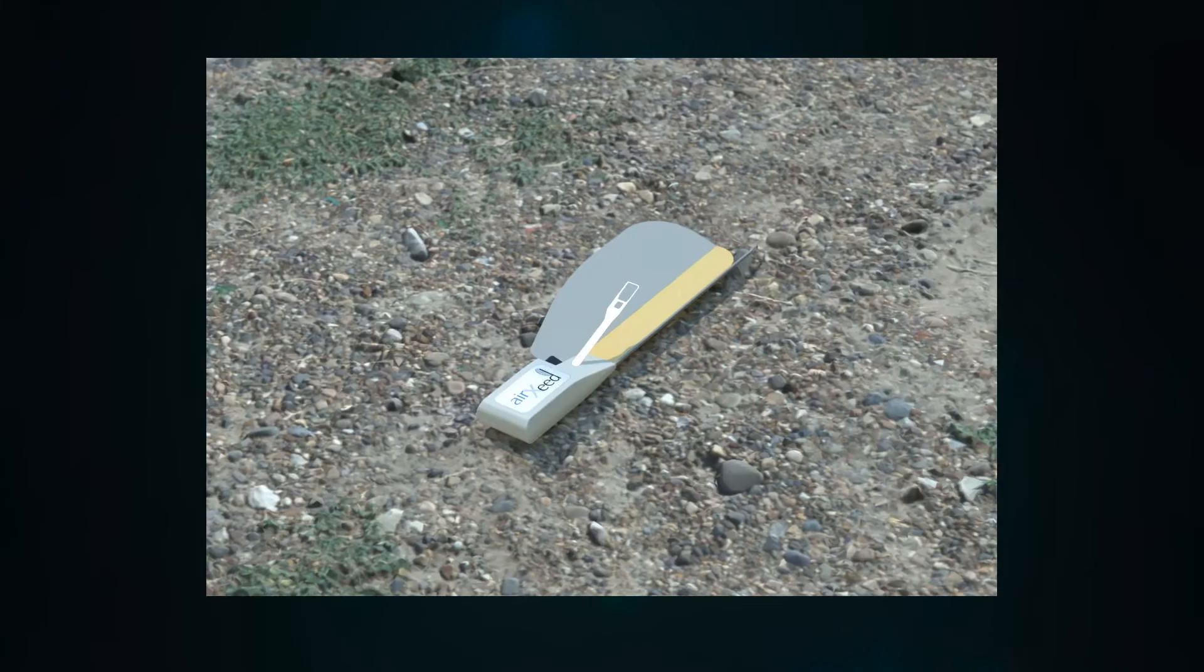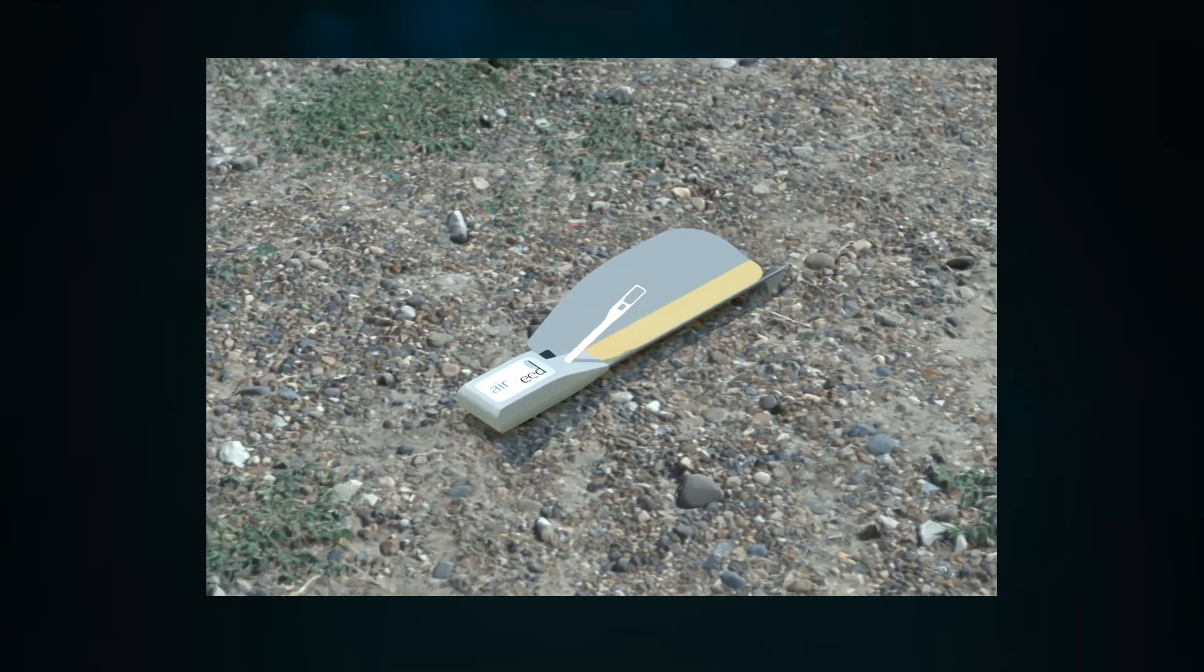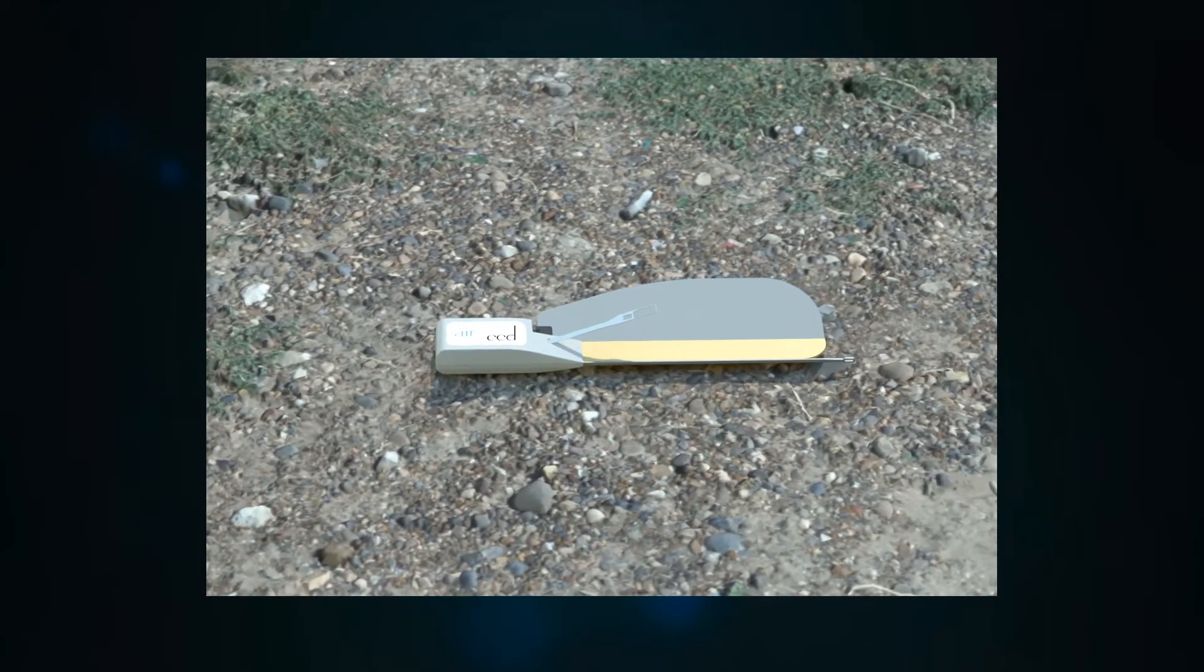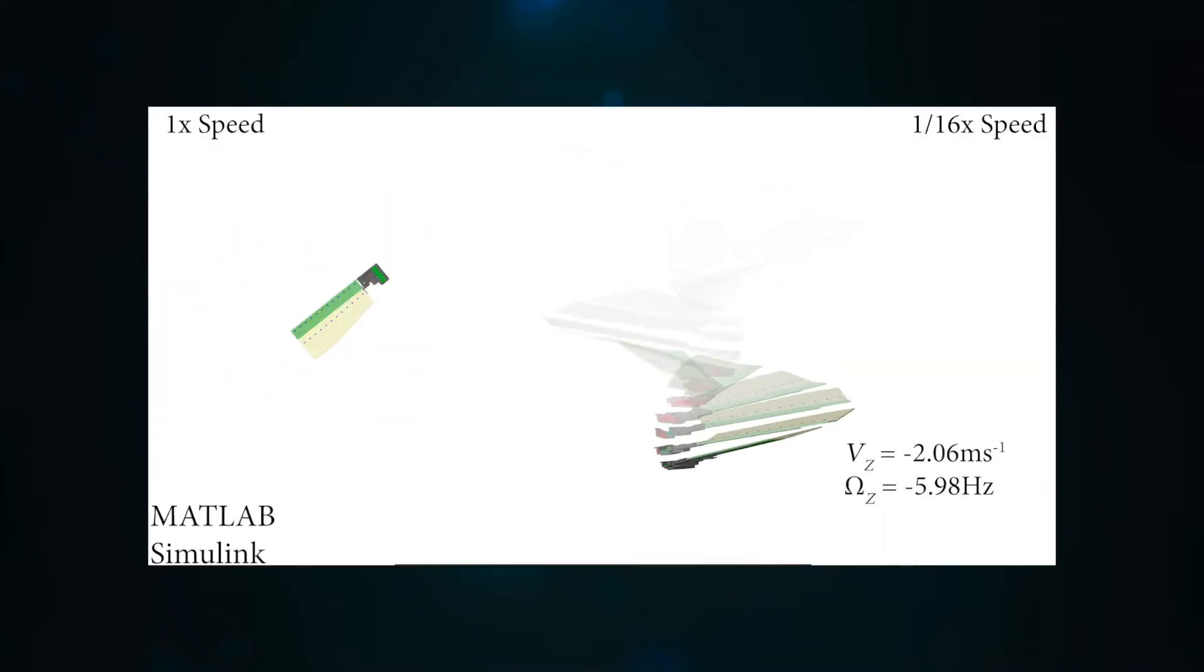Luckily, nature has a solution. Just look at the graceful autorotation of maple seeds. Our radio sonde borrows from the maple seed and makes weather prediction more earth friendly. We optimize the design for best rotation and drop speed.